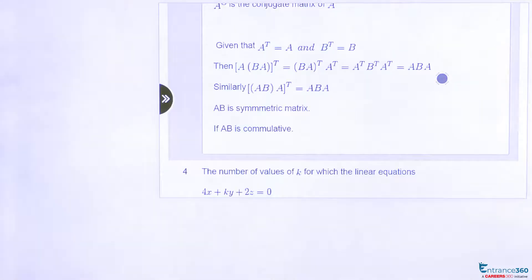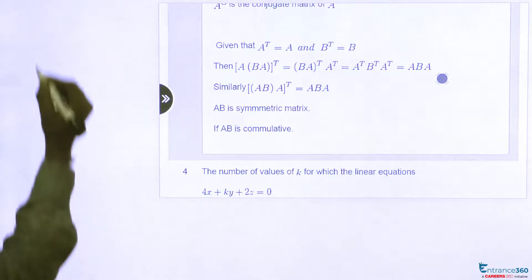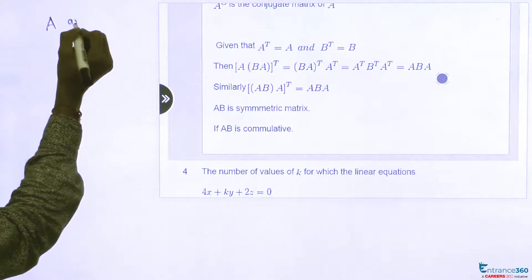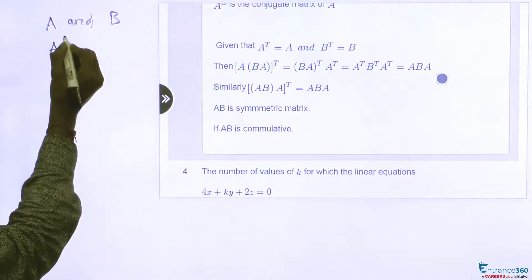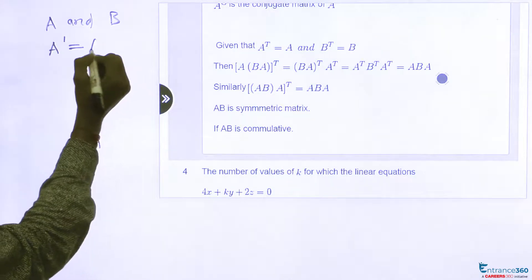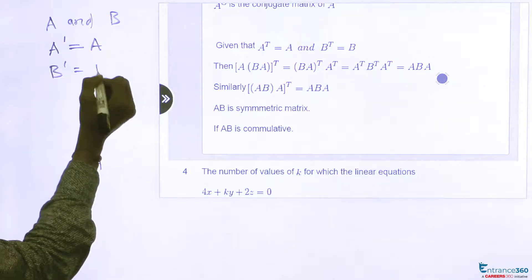Let's see how to solve this question. In the question, it is given that matrix A and matrix B is symmetric matrix. Then the property of symmetric matrix is, transpose of A will be matrix A and transpose of B equal to B.